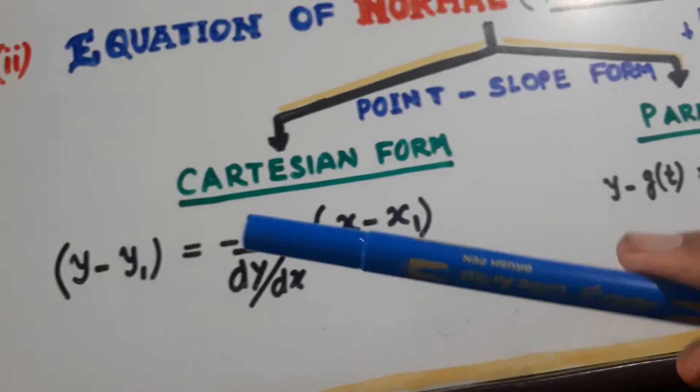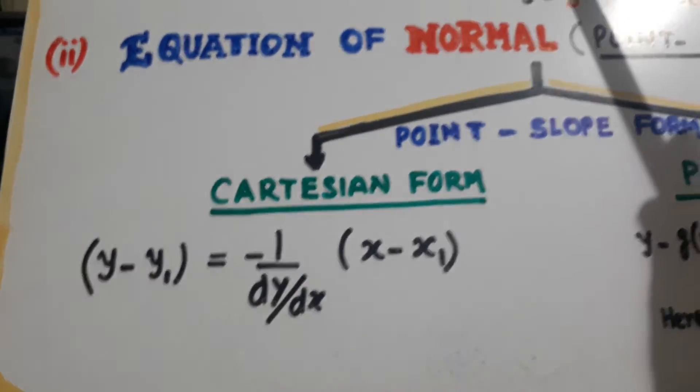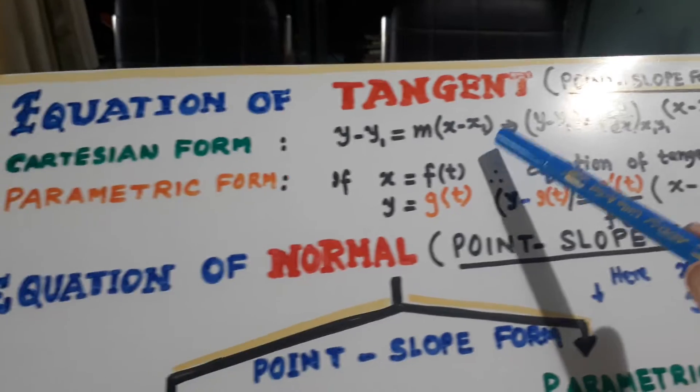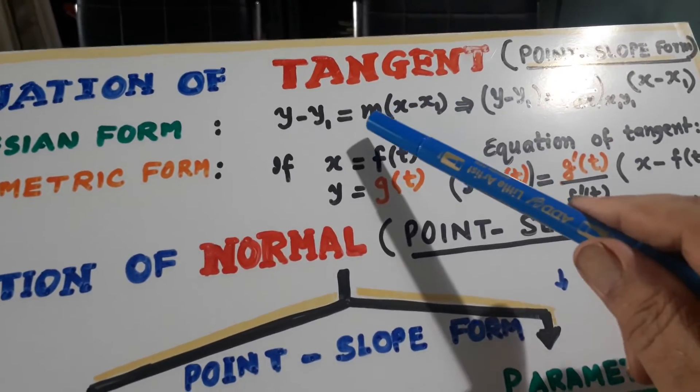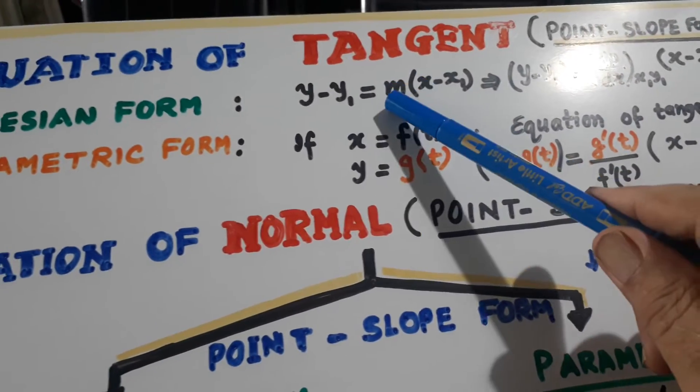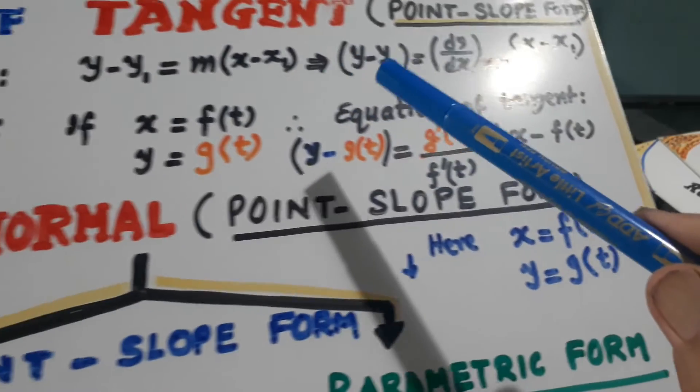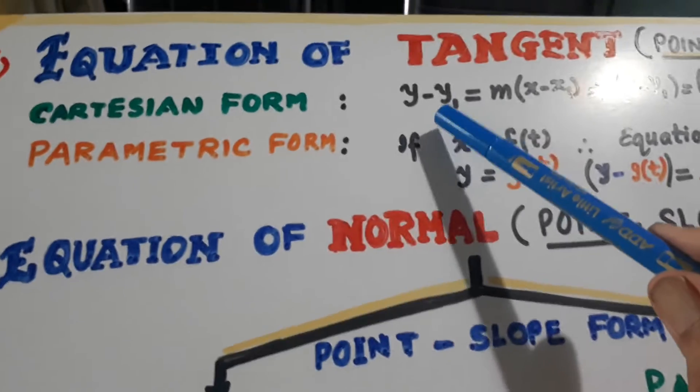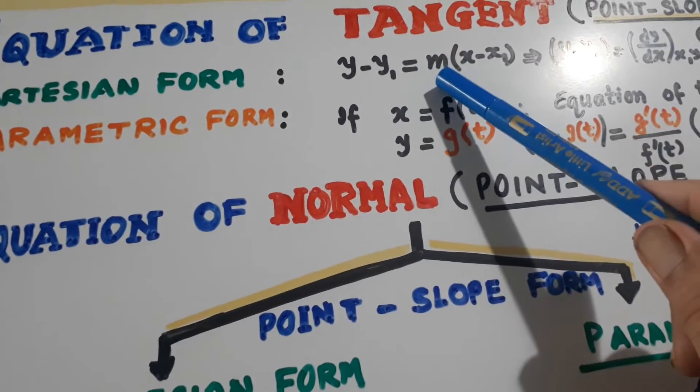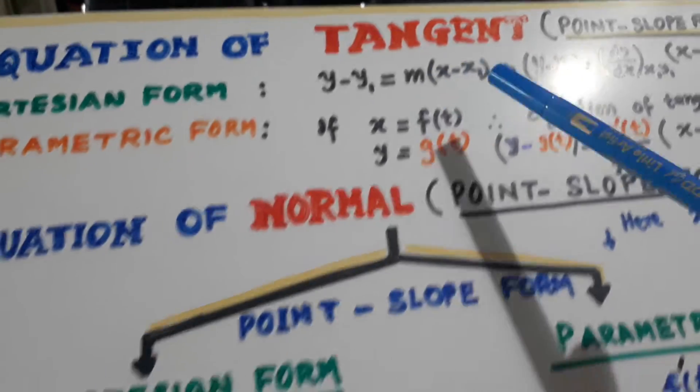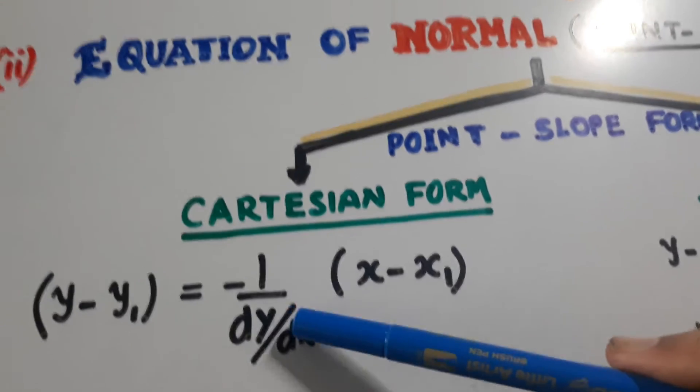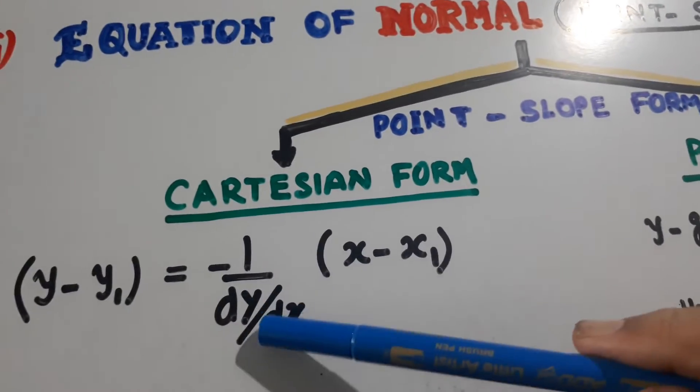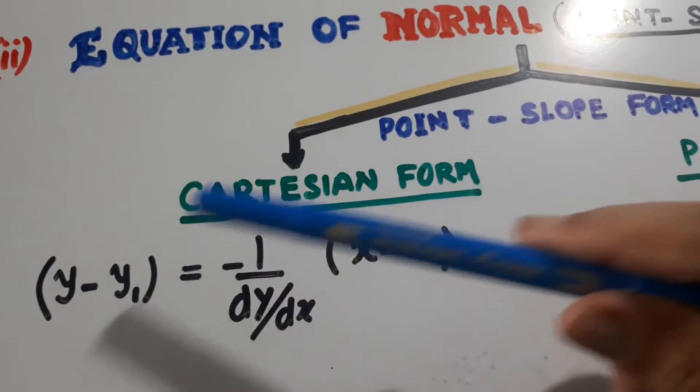Equation of normal. So it is the same as equation of the tangent. Accepting that instead of m, we will write minus 1 over m. That is y minus y1. In place of m what do we put? 1 over m. 1 over dy by dx, with minus. Minus 1 over dy by dx, (x minus x1). This is the Cartesian form.